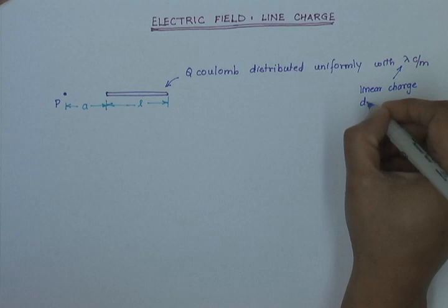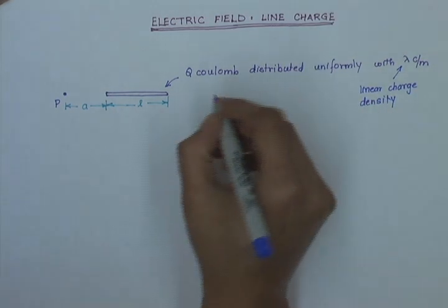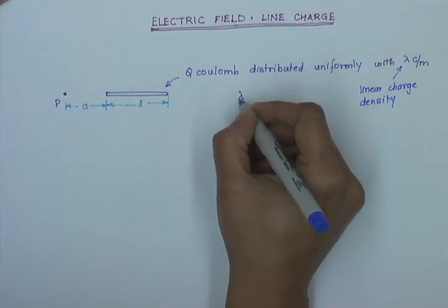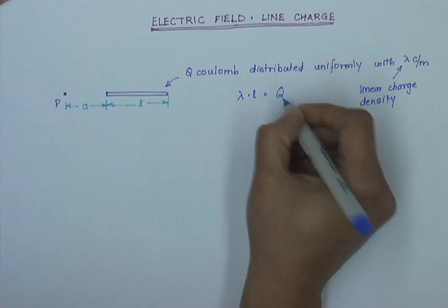And so, I have a rod with lambda coulombs per meter linear charge density that means that if I multiply my lambda times L, I get my total charge Q.